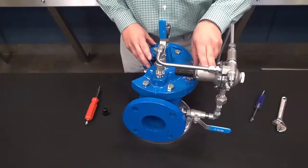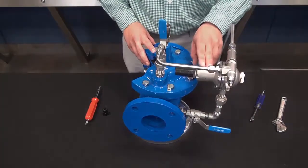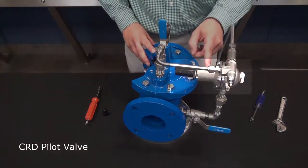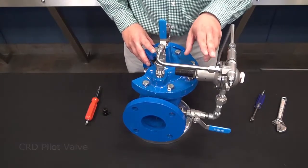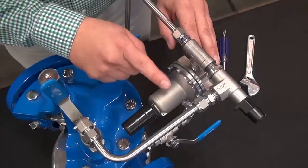Now as we've mentioned before in previous videos, our CRD, our pressure reducing pilot, is a normally open pilot because of the spring tension inside of the CRD on the cover of this body here.